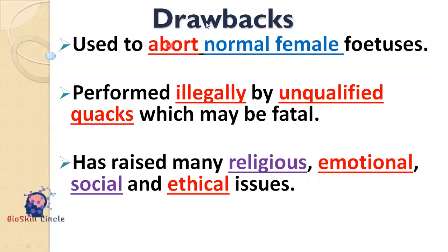What are the drawbacks of MTP? MTP is being misused to abort even normal female fetuses. MTP is sometimes performed illegally by people who pretend to have medical knowledge but have no formal training. These unqualified people could even risk the life of the mother, which is something serious and needs to be checked. MTP has also raised many religious, emotional, social, and ethical issues.